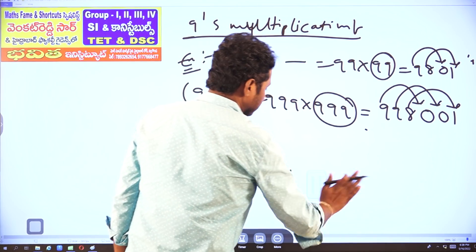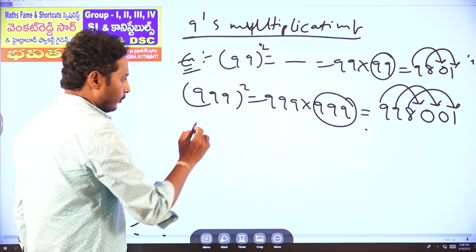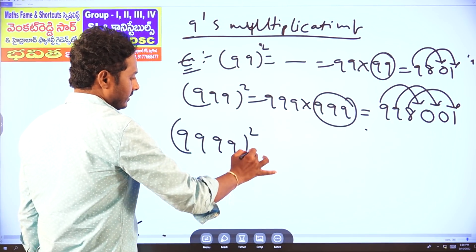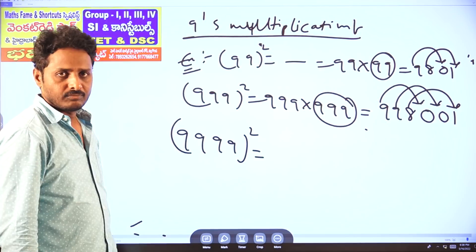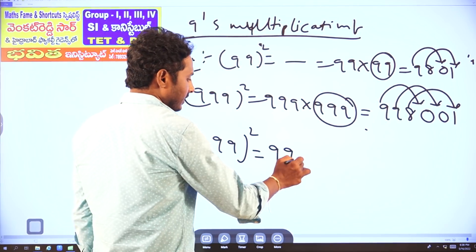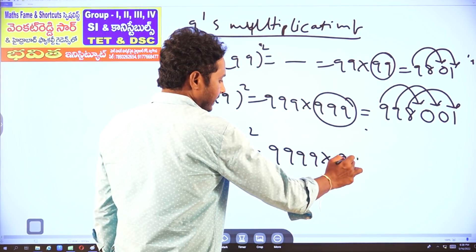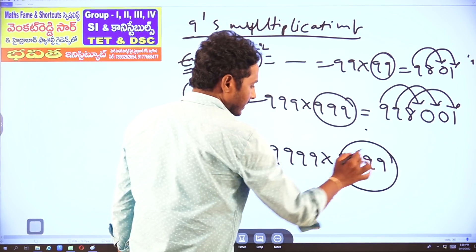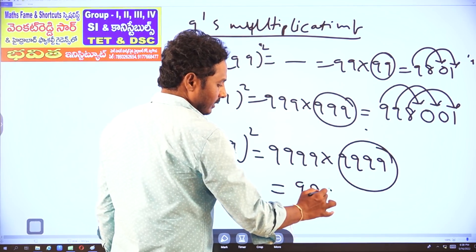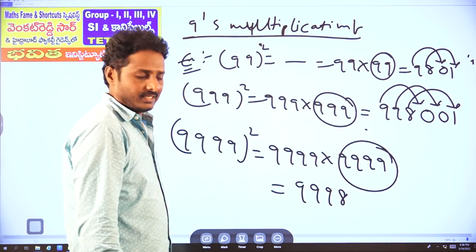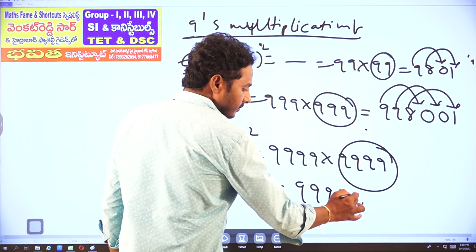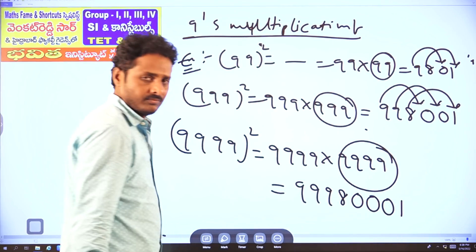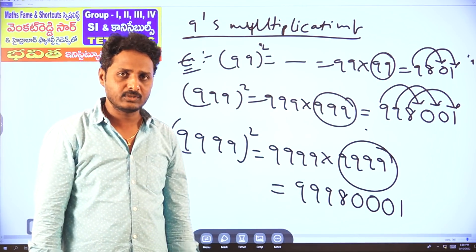Another example: 999 whole square, meaning 999 × 999. Decrease by 1 gives 998. Digit complements: 9 complement 9 is 0, 9 complement 9 is 0, 8 complement 9 is 1. Answer: 998001. This was the Group 4 question — double 9, double 9, whole square. Answer: next to 0, next to 0, 8, double 9 — the full answer.